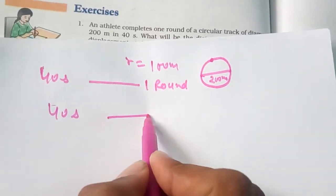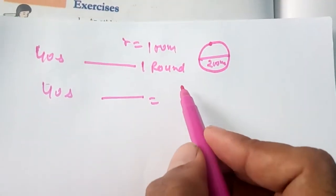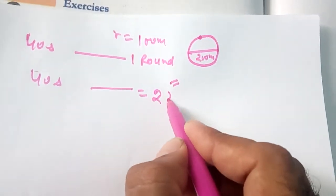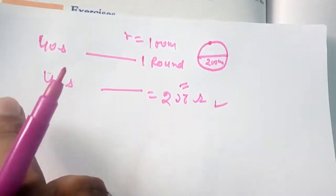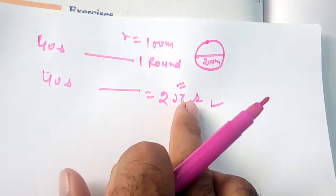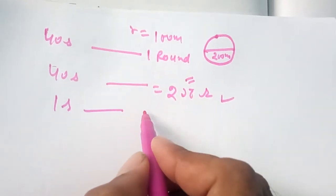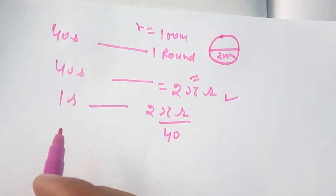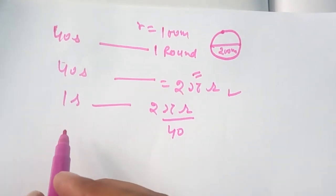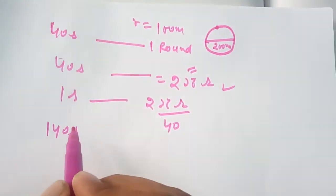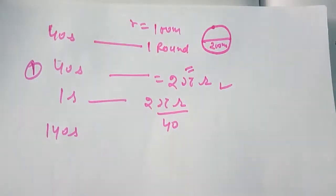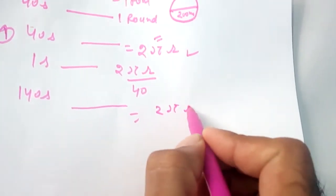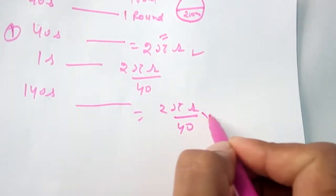So 40 seconds equals 1 round, and 1 round of a circle is 2πr. So the 1-round distance is 2πr. In 1 second it will be 2πr divided by 40. Then for 2 minutes 20 seconds, that is 140 seconds, the distance becomes 2πr upon 40 into 140.